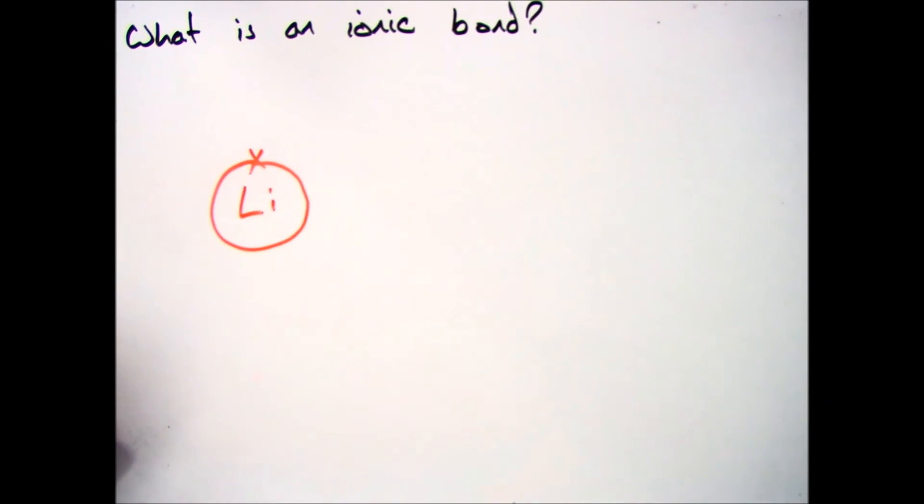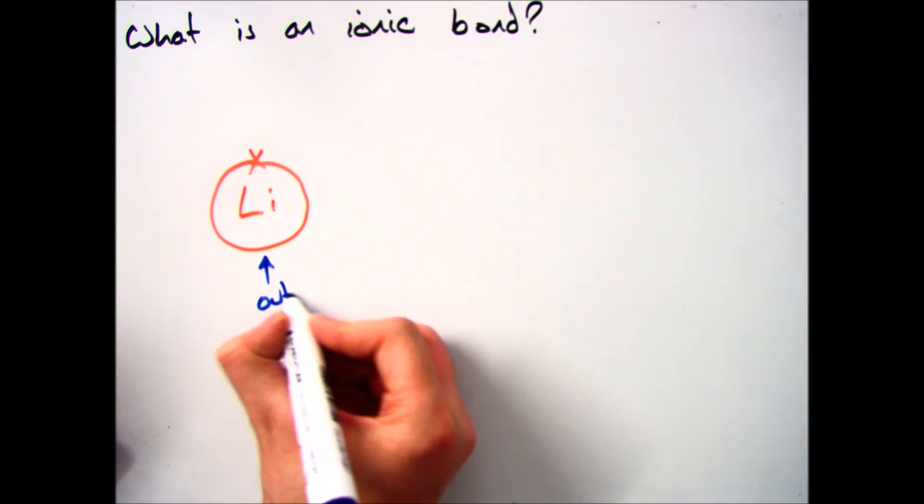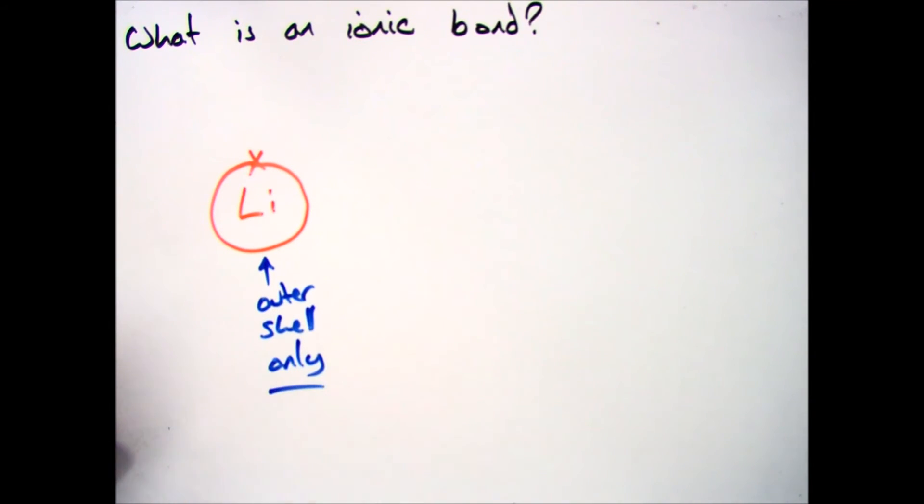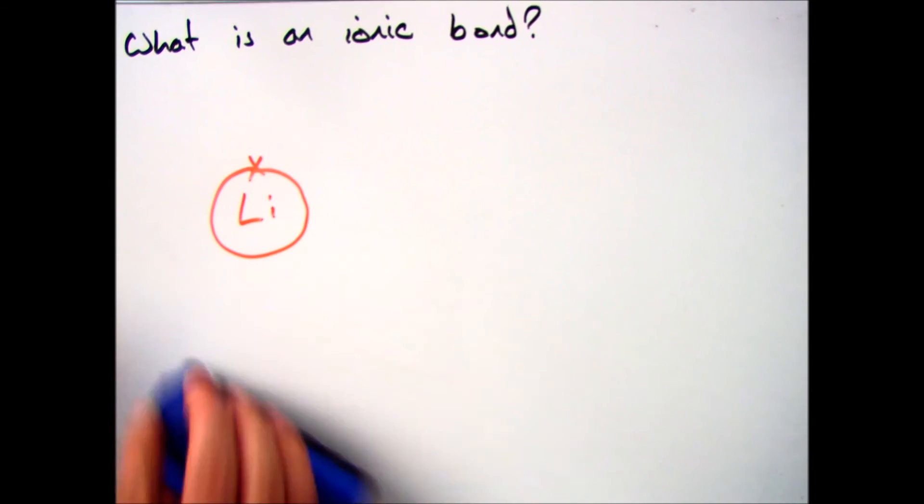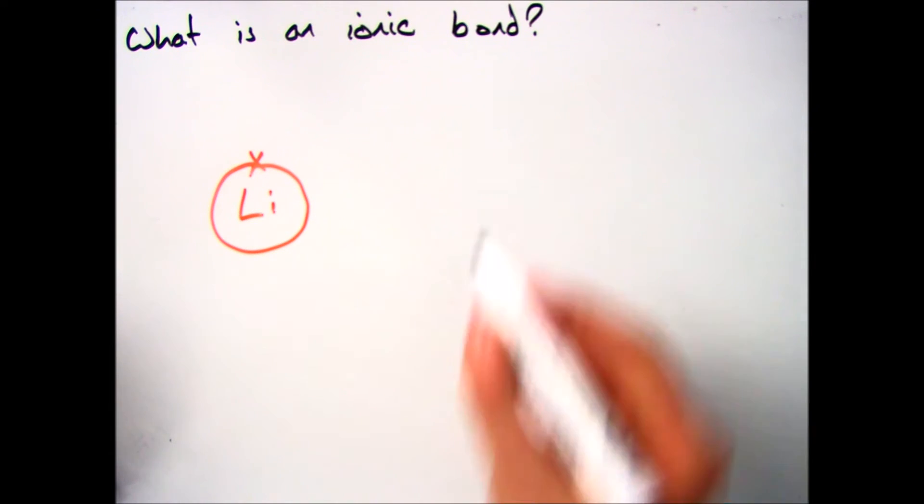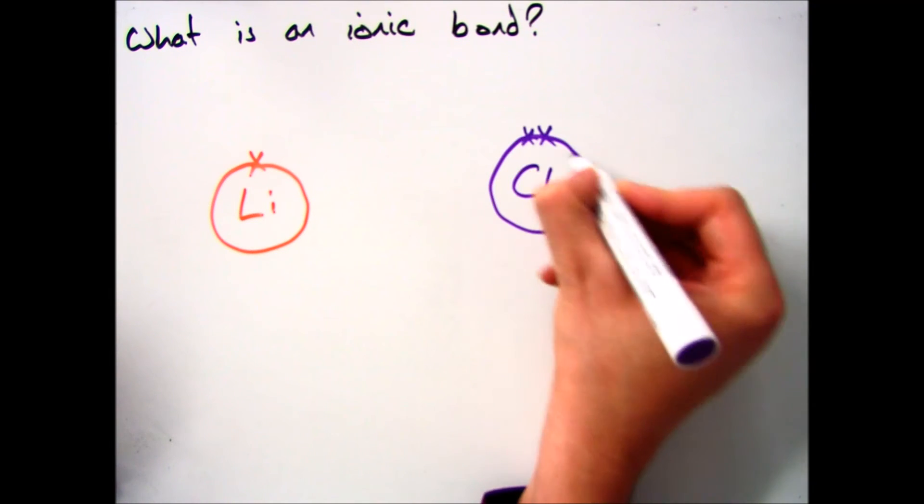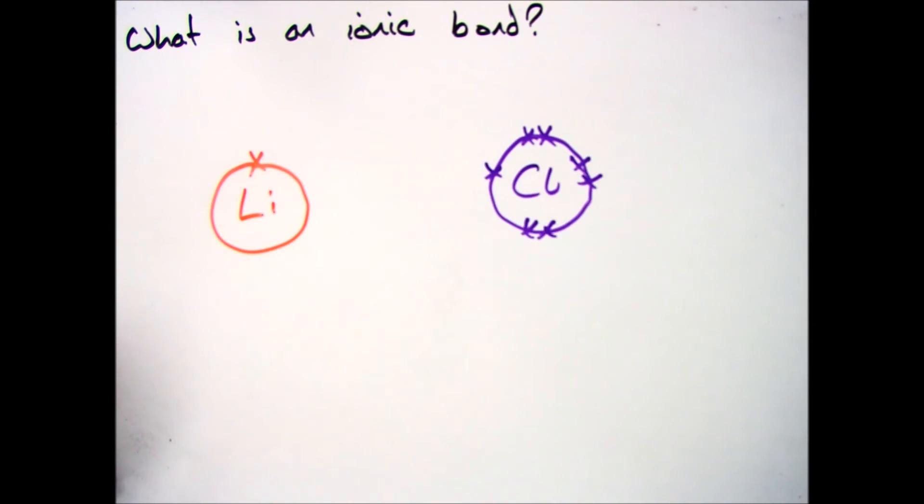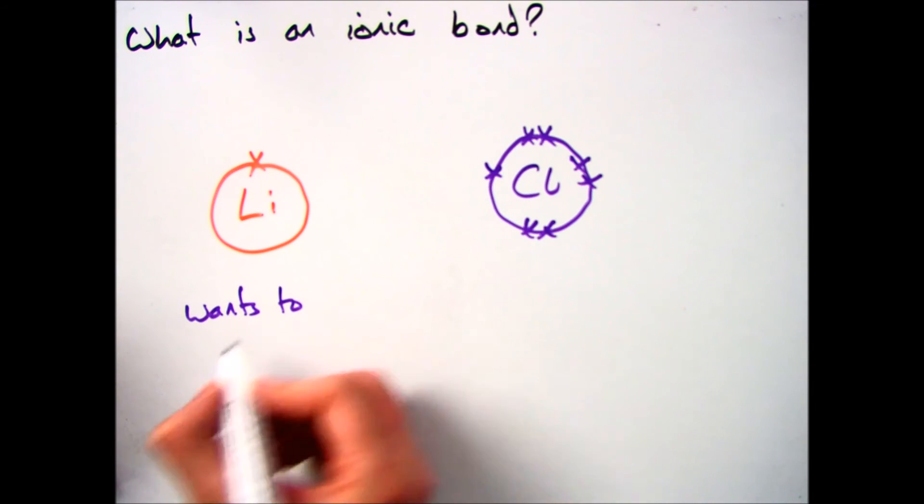So the next part of this video then is we need to discover what an ionic bond actually is. So if we just draw the outer shells, which is what you'd be asked to do in the exam, of your elements, so in this case I'm going to do lithium and chlorine. Lithium's in group 1, so 1 in the outer shell, and chlorine is in group 7, so 7 in the outer shell.